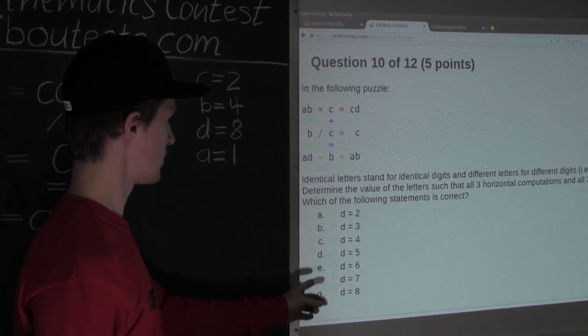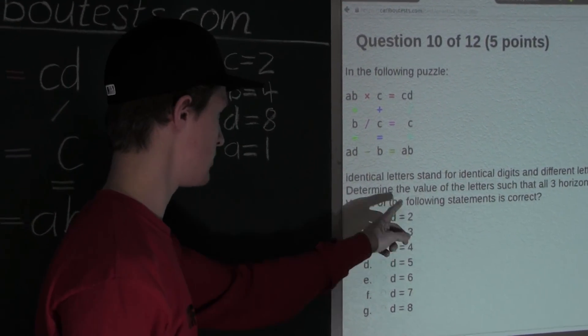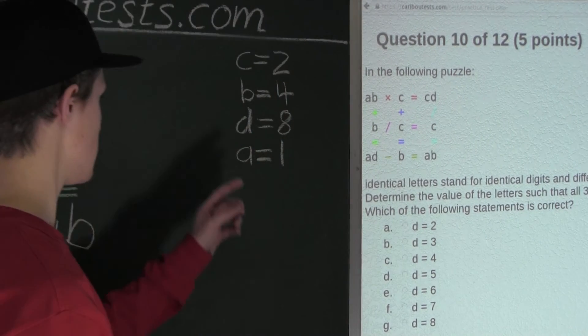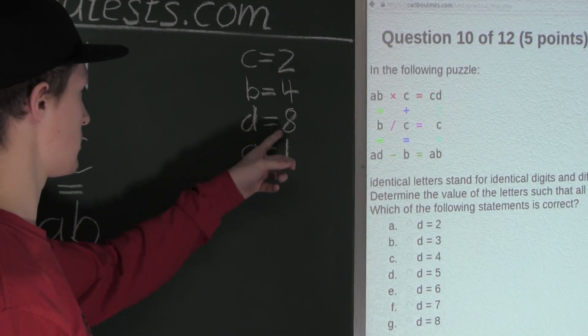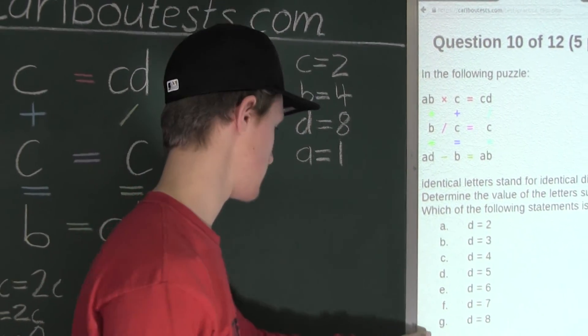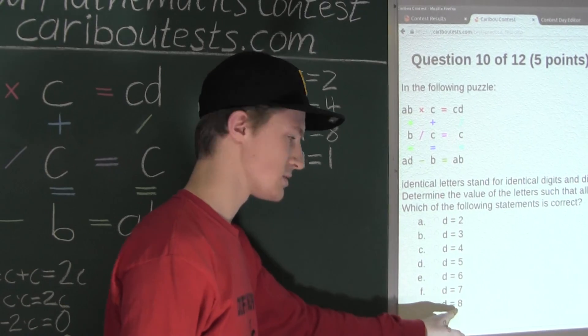Now, let's look at the options. Well, we have D equals 2, and then a different value for all the options. Well, here we know that the correct value for D is 8. So, looking down at the options, well, we see it must be option G, D equals to 8.